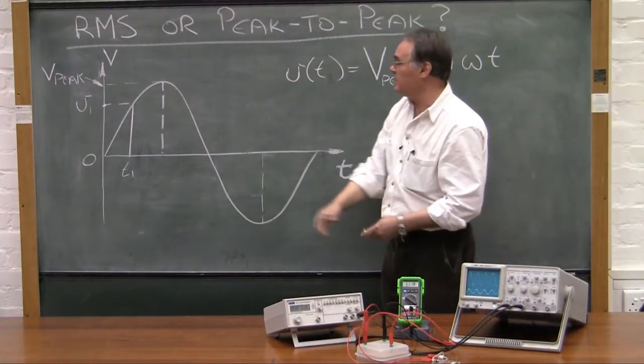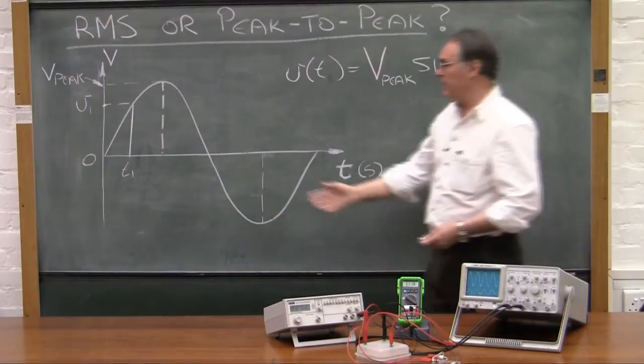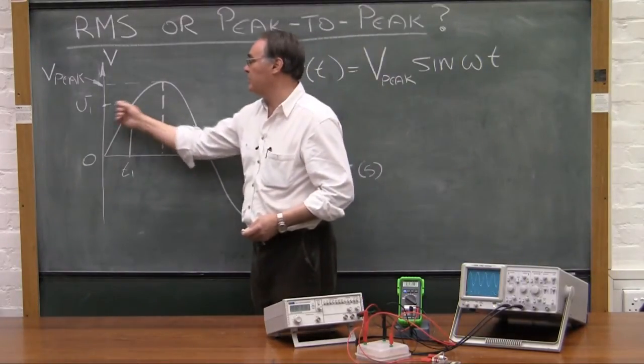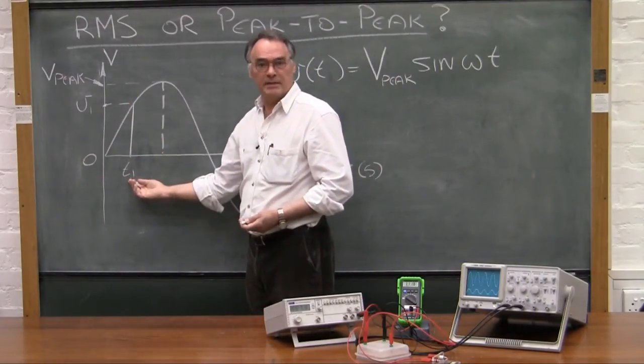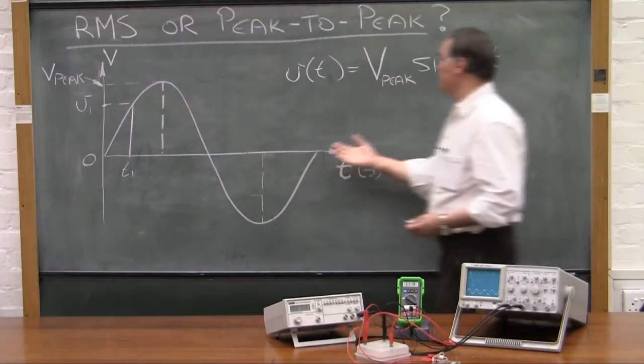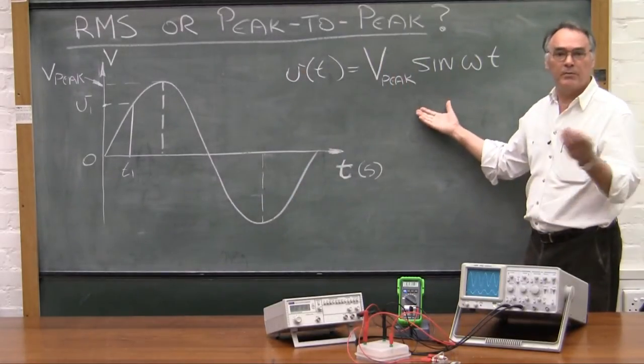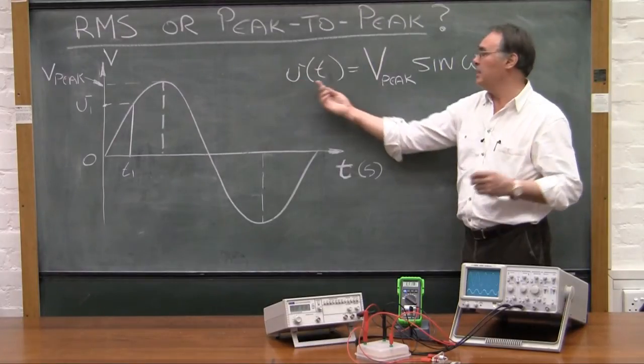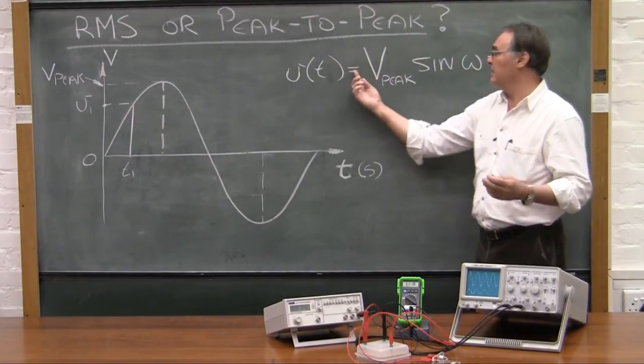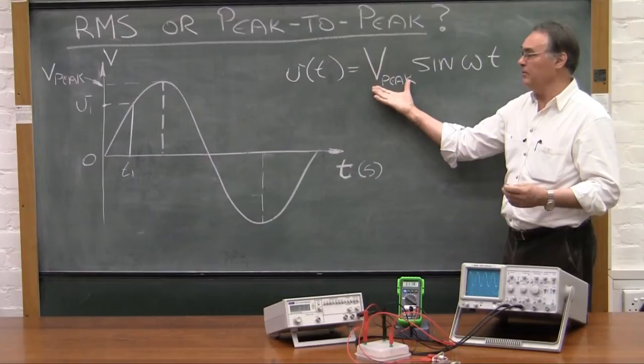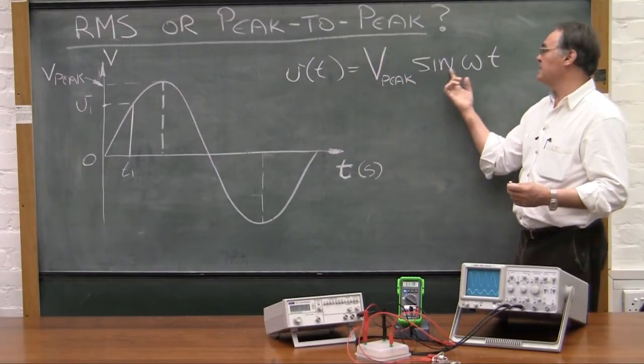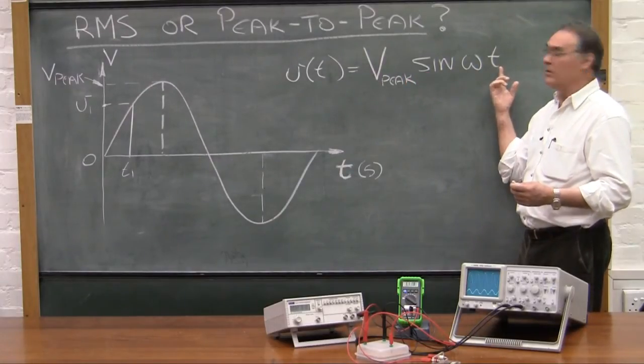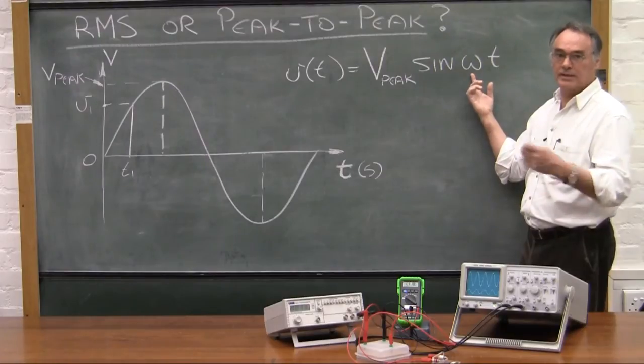Now where would we use this? Assuming you wanted to find an instantaneous voltage at some time t, then you would use this expression with which you'll be familiar from your wave work possibly. That will be the instantaneous voltage at some time t is the peak value times the sine omega t, where omega of course relates to the frequency.